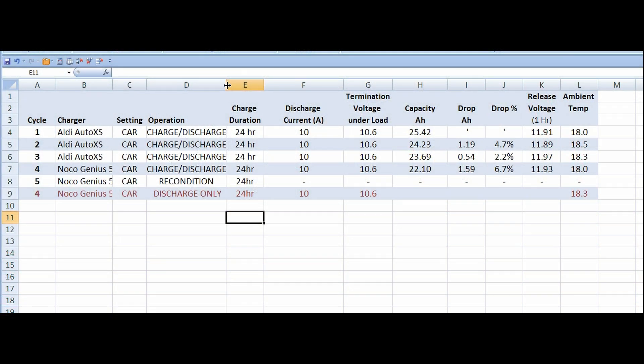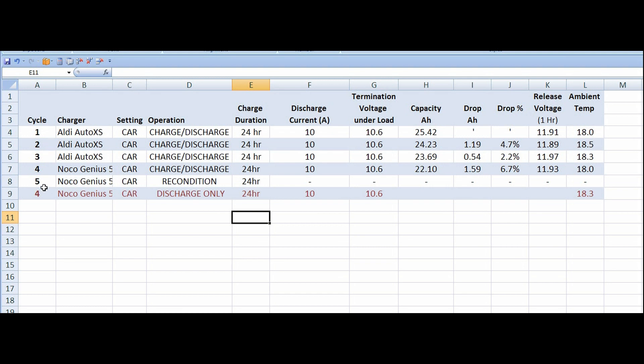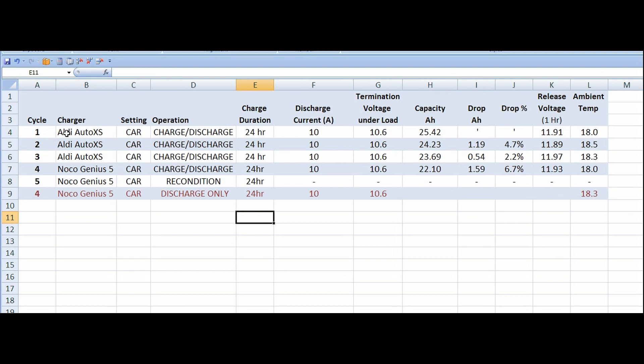Okay, let's have a look at these results. You can see here I've done five tests so far or five cycles so far and this is when the battery, cycle one up here on the left, is when the battery first came out of the car. Charged with an Aldi Auto XS battery charger and charged for 24 hours until it was complete. 10 amp discharge current. Termination voltage is set to 10.6. So when it gets to 10.6, the current switches off and the amp hour capacity is measured. And then over here on the right is the temperature.